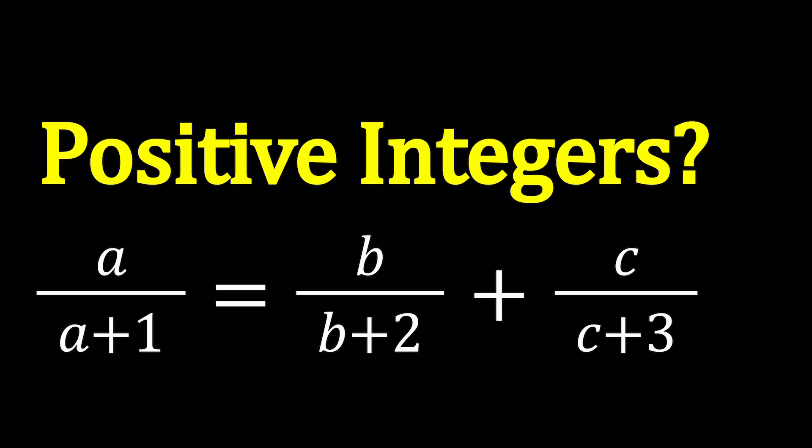So Diophantine equations are lots of fun, and usually we have fewer equations than the number of variables. In other words, if you have two variables, you may have one single equation. In this case, we have three variables. That's the beauty of equations with integer solutions. Let's go ahead and start.